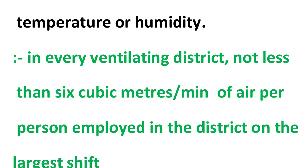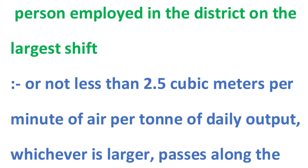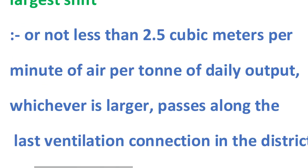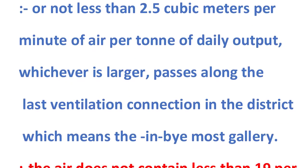In every ventilation district, not less than 6 cubic meters per minute of air per person employed in the district on the largest shift. Also, not less than a specified cubic meters per minute of air per ton of daily output — whichever is largest — must pass along the last ventilation connection in the district, meaning the innermost or by-most gallery.